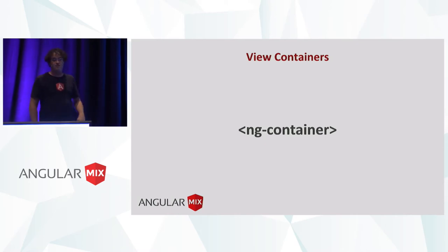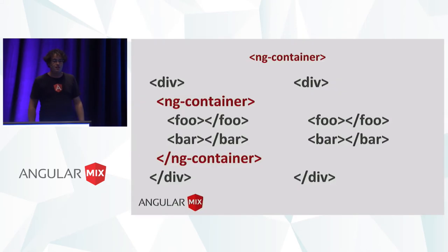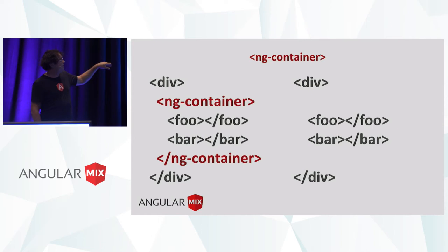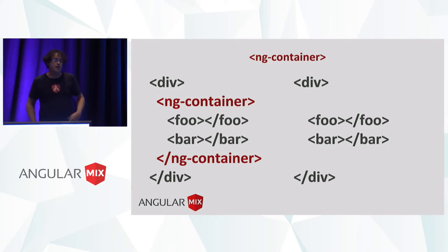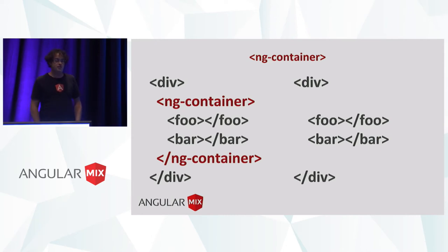ng-container is kind of like an invisible div. It exists to organize your code — you can place other elements and components inside it. But at runtime when it's rendered, its children are rendered but the container itself is nonexistent in the runtime DOM. We can place logic on this container — we can add ngIf or ngFor, repeat the section inside of it — and that lets us organize our code without resorting to a bunch of nested divs.